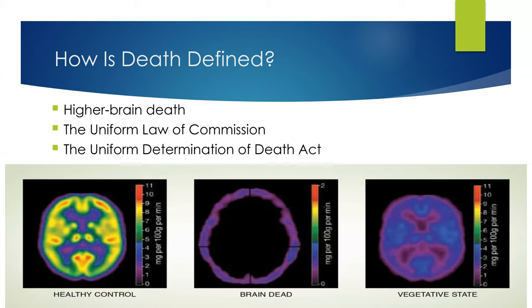The Uniform Determination of Death Act, adopted in 1981, further clarified how we declare death. Providers assess brain stem function by checking for fixed pupils unresponsive to light, absence of a corneal reflex, and no vestibulo-ocular reflexes — brain stem function must be lost to declare death. Doctors may also obtain a cerebral blood flow study, where contrast dye is given through an IV and a CT scanner evaluates blood flow through the brain.